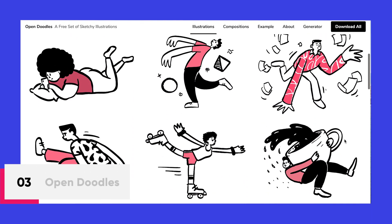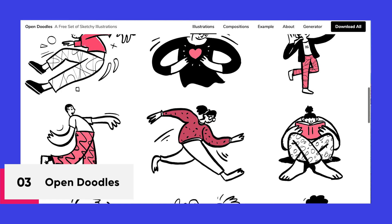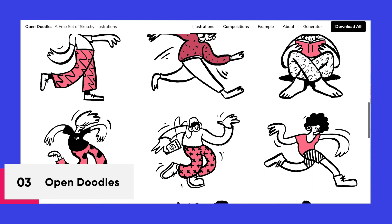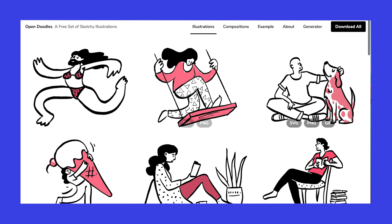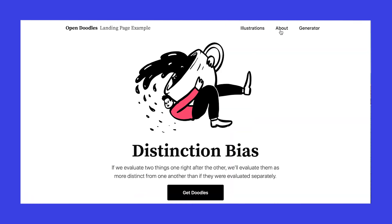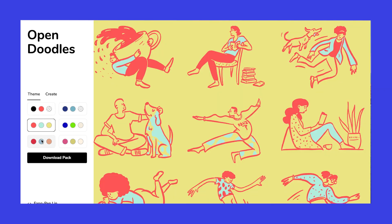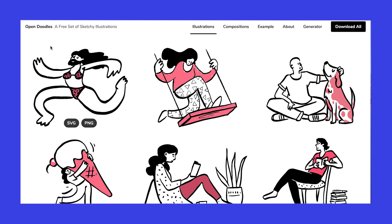Next is Open Doodles by Pablo Stanley — illustrations are indeed his forte. This time with Open Doodles, a website consisting of free hand-drawn character illustrations. The good part about this website is that the source files, templates and layouts of the illustrations are also available for download.